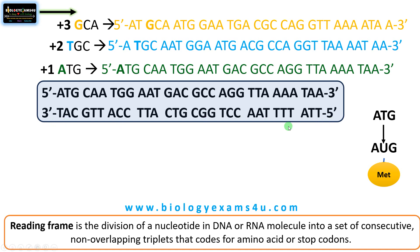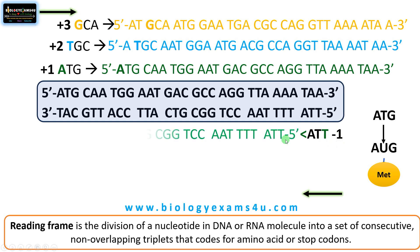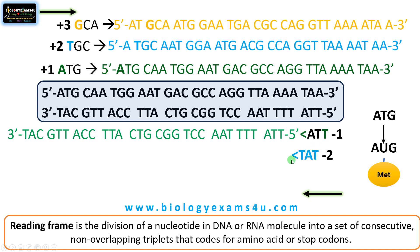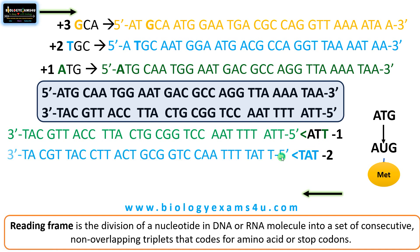The same applies to the complementary strand, which must also be read in the 5' to 3' direction. Starting with the first nucleotide T gives the minus one frame with triplets TTA, TTT, and so on. Beginning with the second nucleotide T gives the minus two frame with triplets TAT, TTT, AAC, and so on.